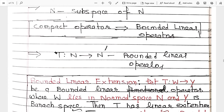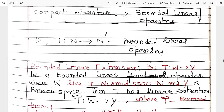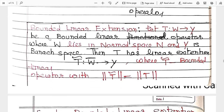The bounded linear extension theorem states: let T be a bounded linear operator from W to Y, where W lies in a normed space N and Y is a Banach space. Then T has a linear extension to W-bar (the closure of W), and this extension is a bounded linear operator with the same norm as T.